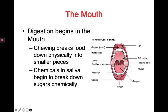So we're going to start with the mouth. Digestion begins in the mouth. Chewing breaks down food physically into smaller pieces, and the chemicals in saliva begin to break down sugars and starches chemically. So as soon as you put food in your mouth, digestion has begun.